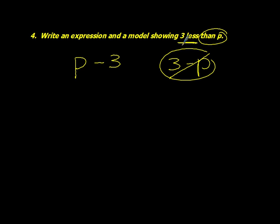Number 4, write an expression and a model showing 3 less than P. Pause and come back when you're ready. Alright, let's see how you did. So showing 3 less than P, so that's really P minus 3. It wouldn't be 3 minus P. That's incorrect because this is saying 3 less than the number P or the letter P.